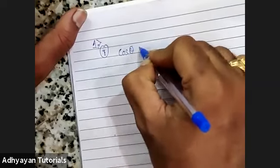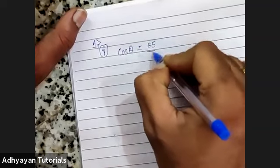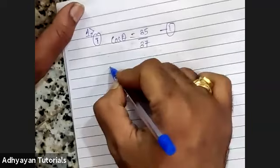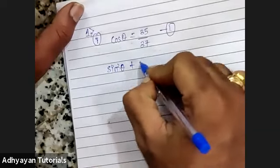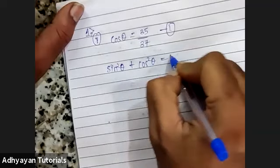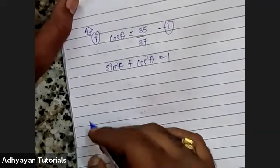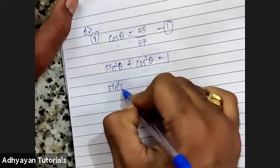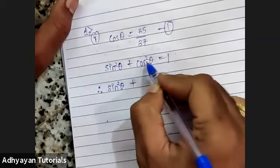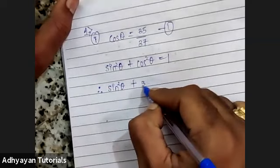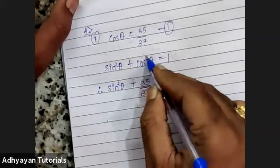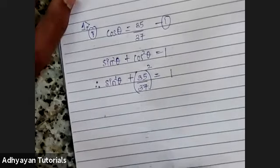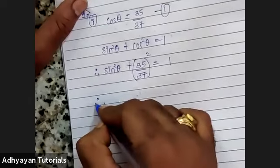The same question with another method based on identity. Cos θ = 35/37 — marked as equation 1. Now I'll use the identity: sin²θ + cos²θ = 1. I'll substitute the value of cos θ. This becomes sin²θ + (35/37)² = 1. Since it is cos², it is the whole square equals 1. 35² = 1225.